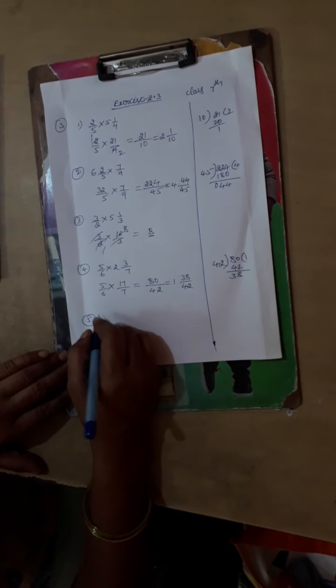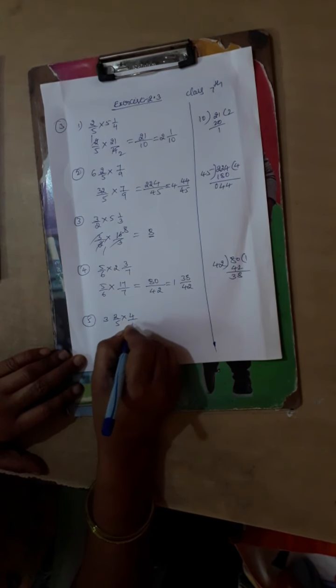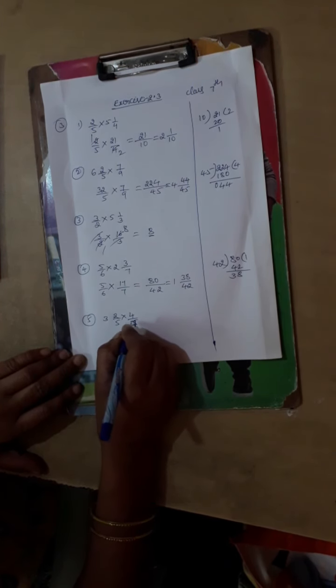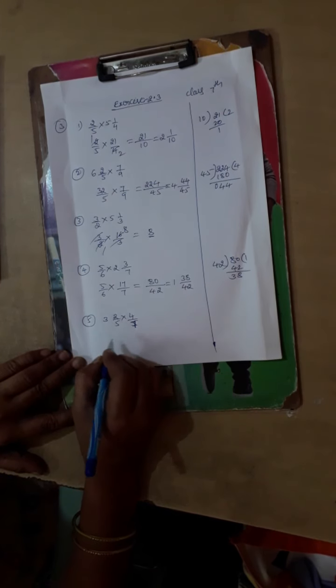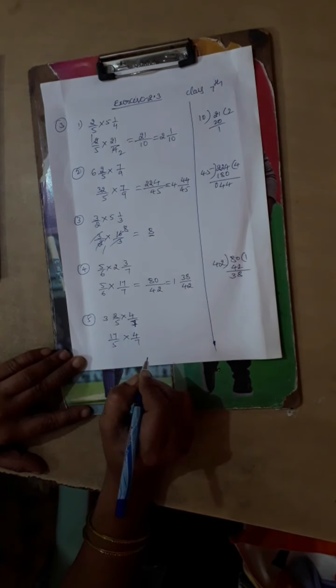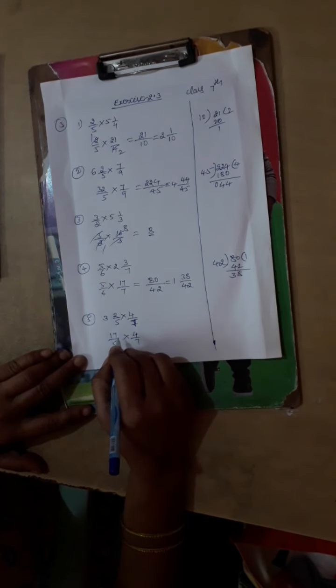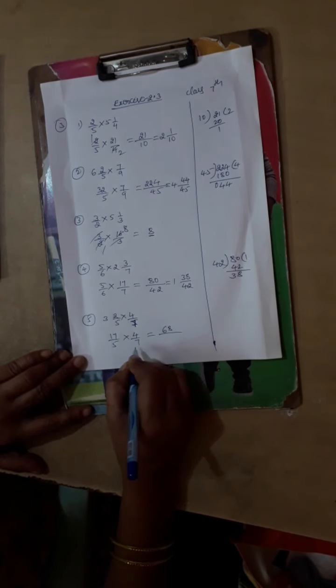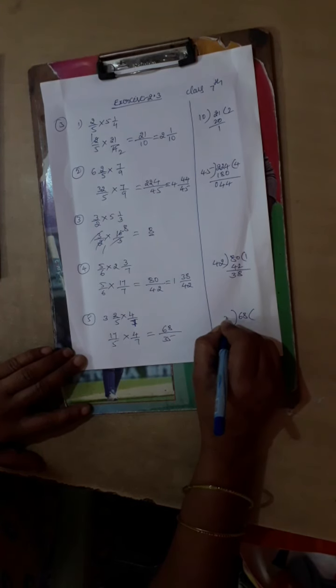Then 5th one: 3 2 by 5 into 4 by 7. So let us multiply: 5 times 3 is 15, 15 plus 2 is 17 by 5 into 4 by 7. Here also we cannot cancel any numerator with denominator. So 17 times 4 is 68, divided by 7 times 5 is 35.